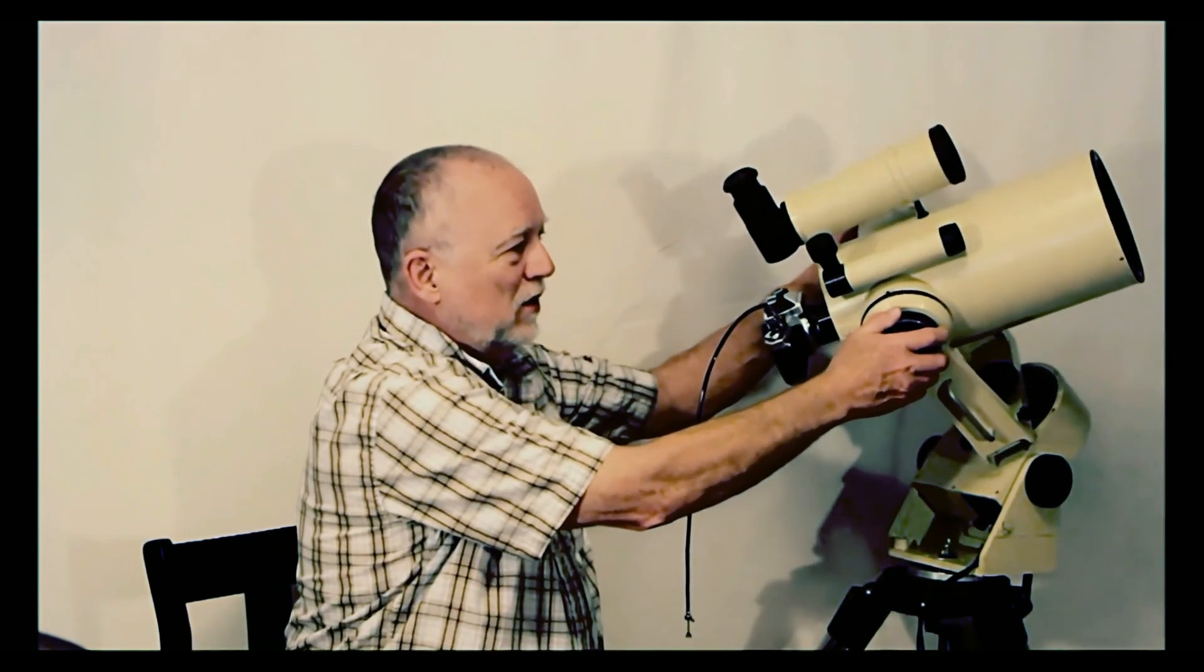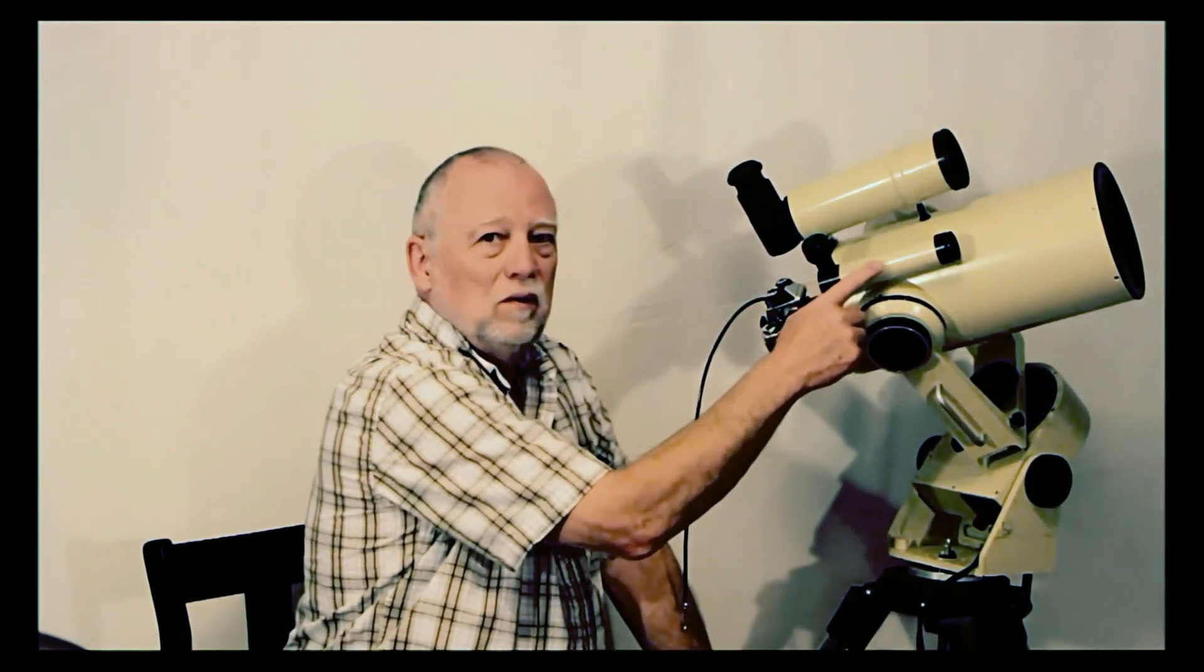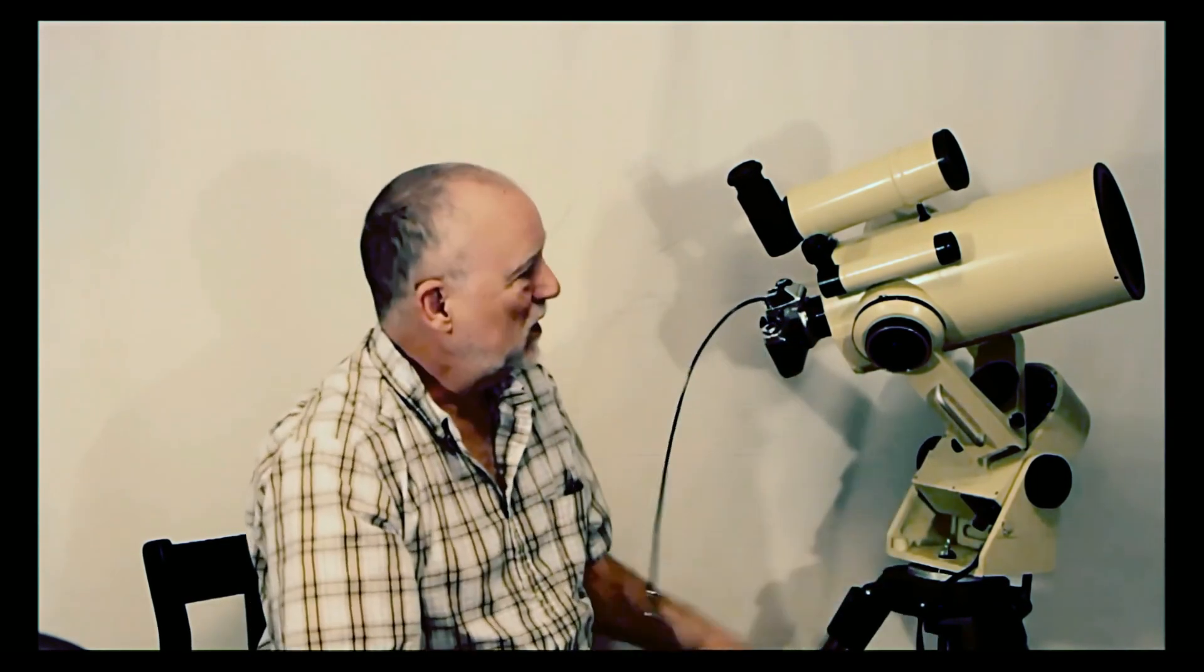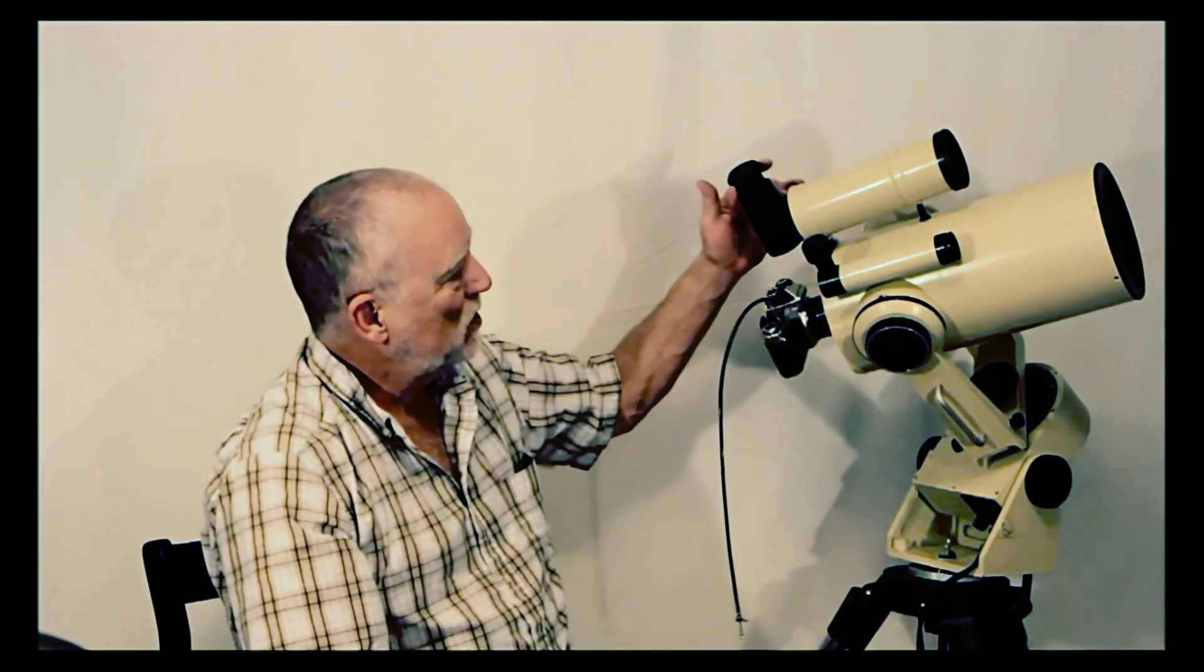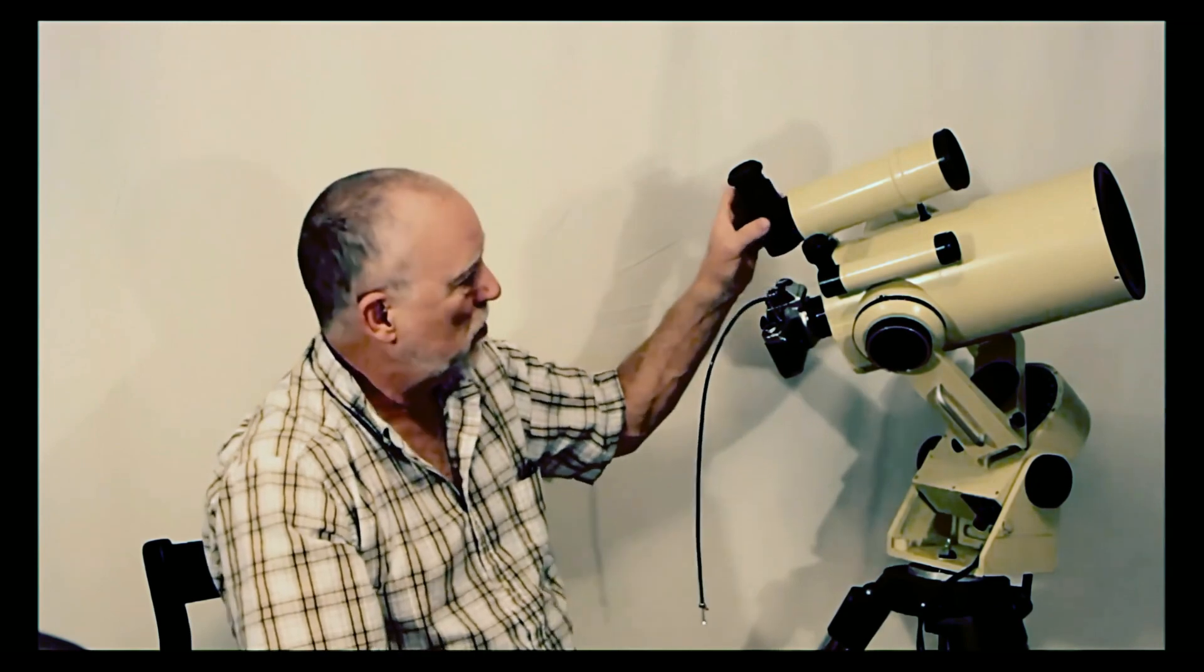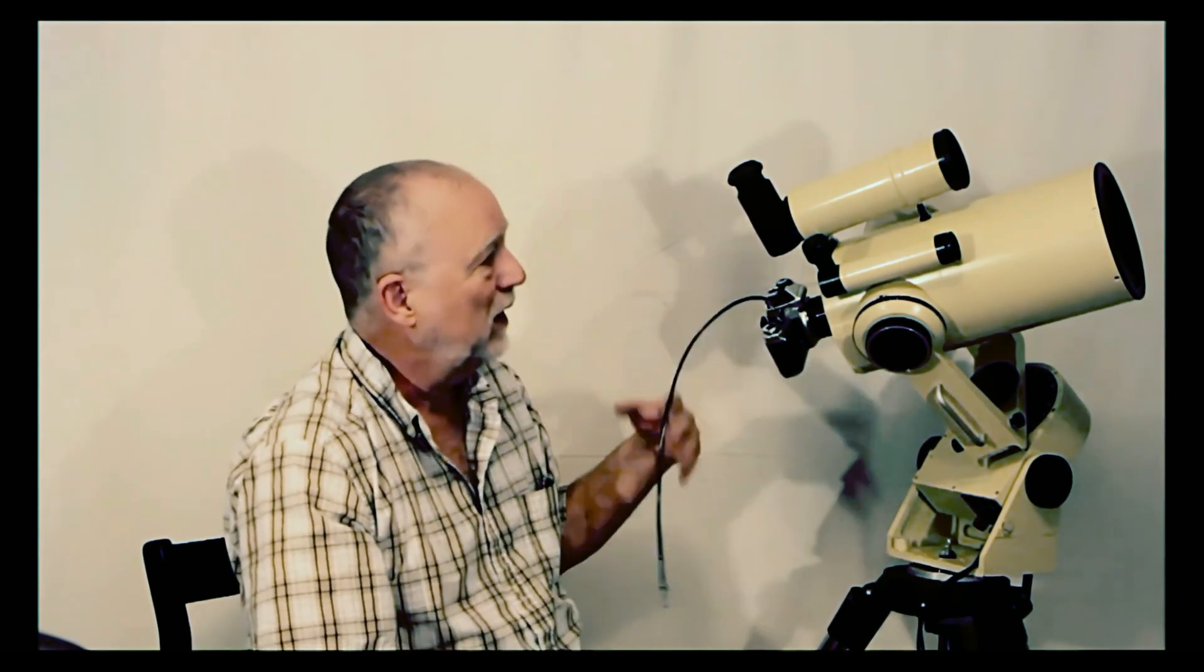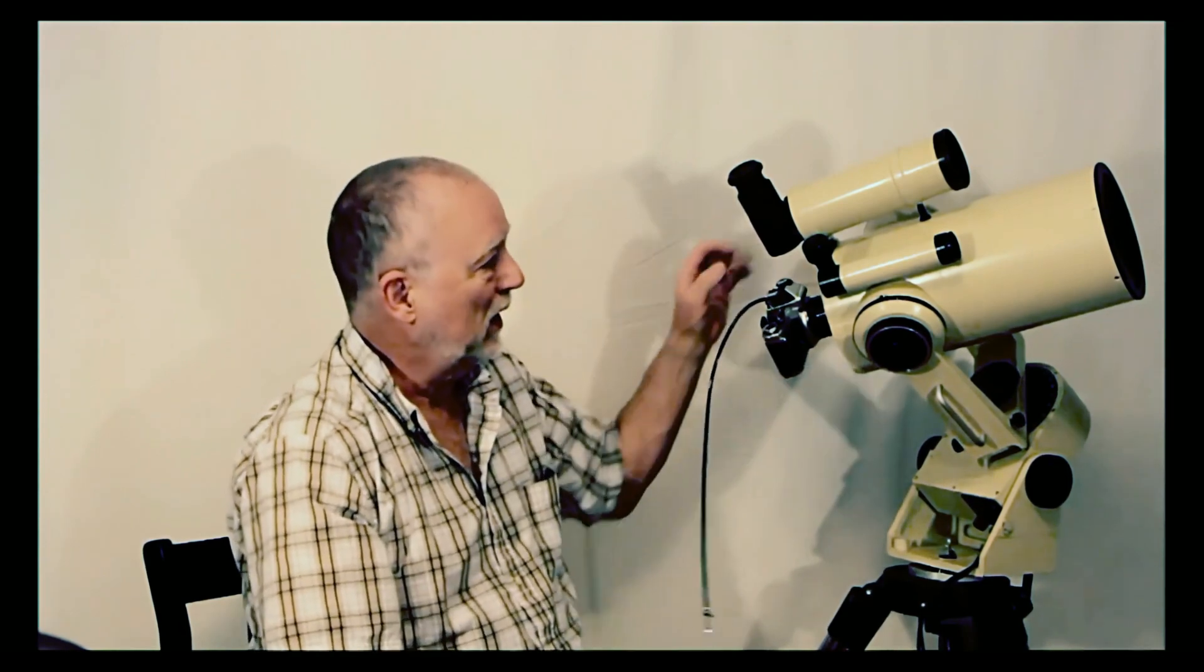It's also got an interesting right angle finder scope, and this has a focusing device here, similar to the main focusing device on the main scope. This would be exchangeable, so you could put this on the back of the telescope if you weren't doing astrophotography, and you could use it visually.